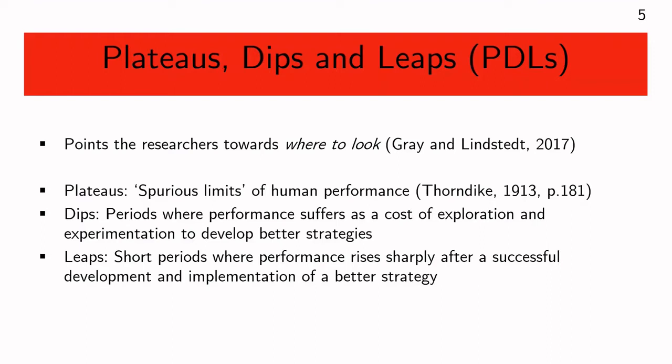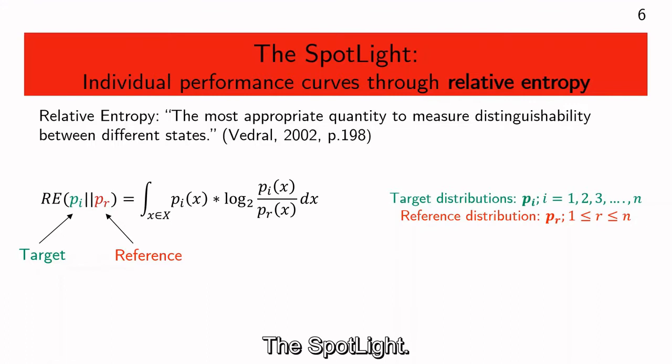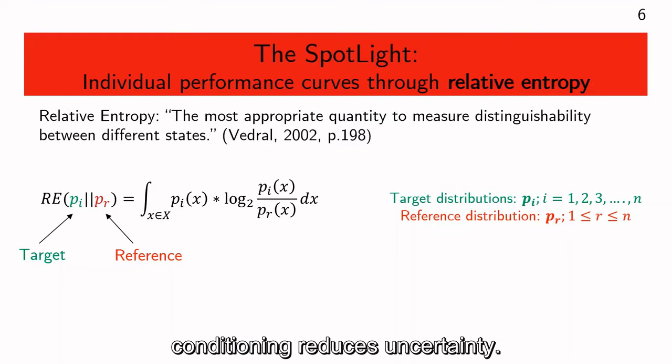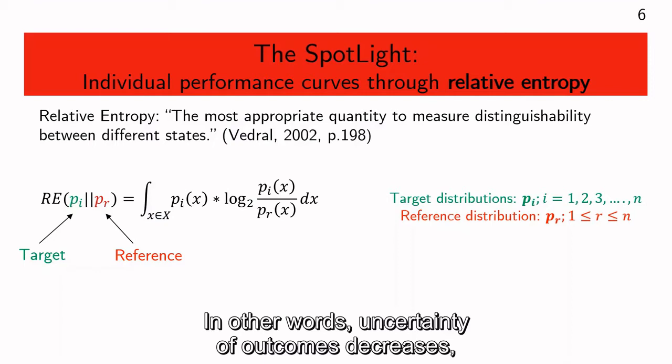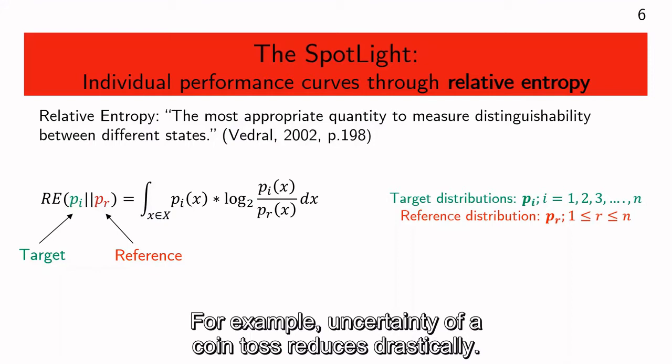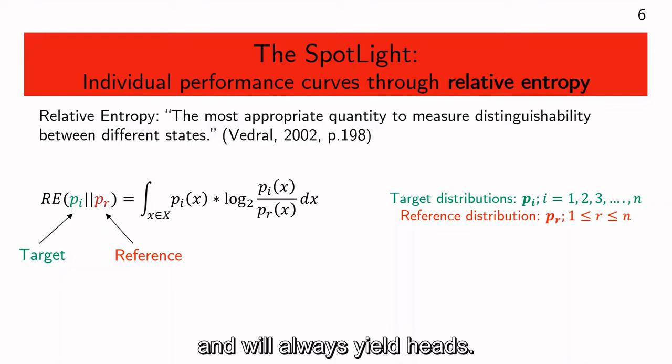To identify these periods of plateau, dips, and leaps, we developed an information theory tool called the spotlight. The basis of the spotlight lies in a simple theorem of information theory: conditioning reduces uncertainty. In other words, uncertainty of outcomes decreases if we have more information about the conditions. For example, uncertainty of a coin toss reduces drastically if we know that the coin is double-headed and would always yield heads — in fact, the uncertainty goes down to zero.